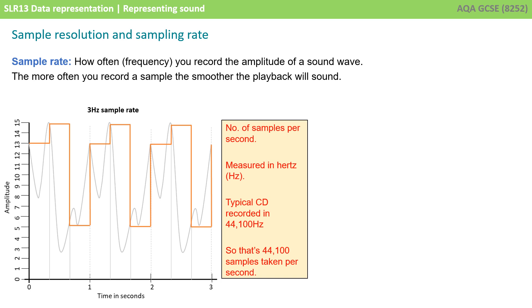For example, a music CD is sampled at 44,100 hertz. That's 44,100 times a second.